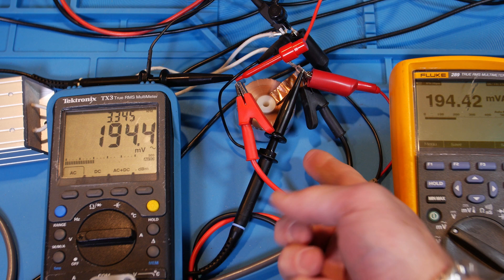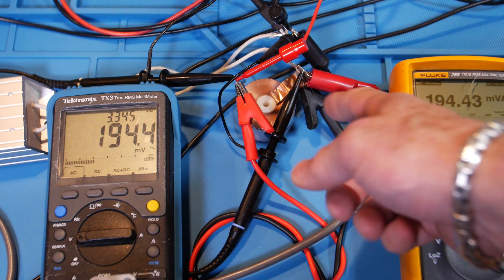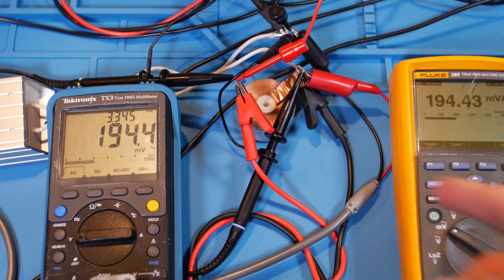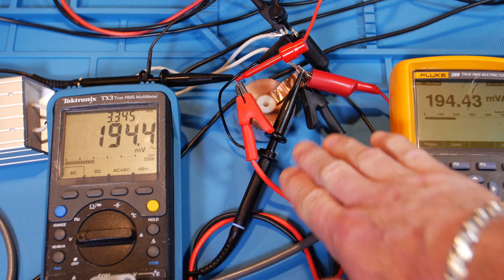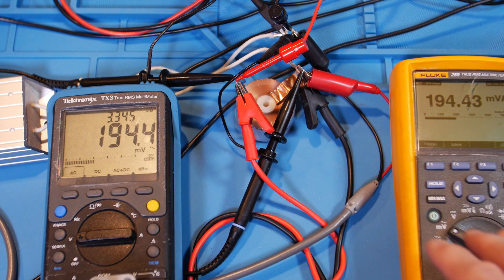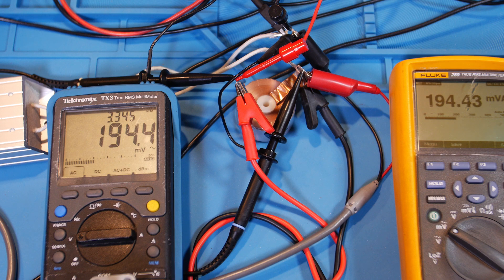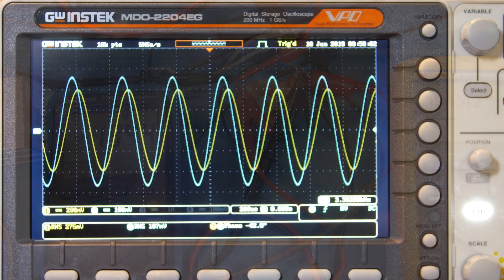Alright, now, if I read on the side, it says it's 0.390 microhenries, 0.39 millihenries. So that's what it was rated for. But I would be inclined to believe this right now. But let's measure it on the scope, and then we'll measure on the LCR meter.